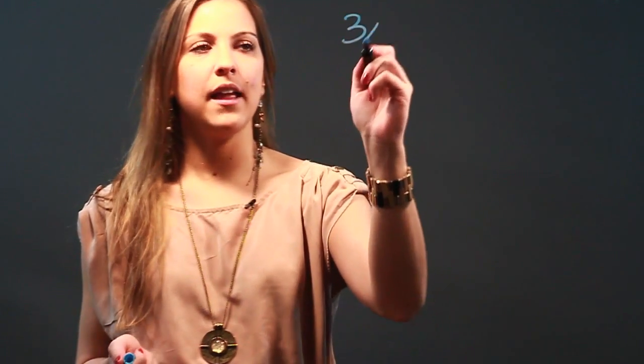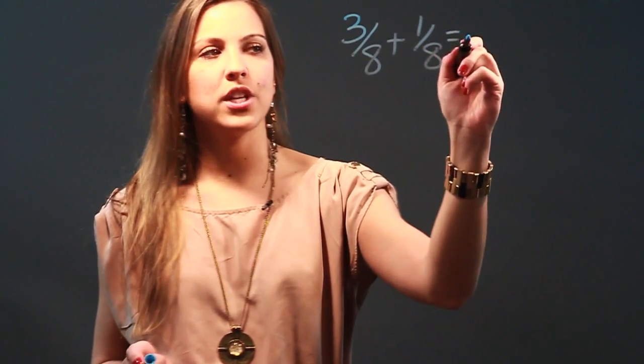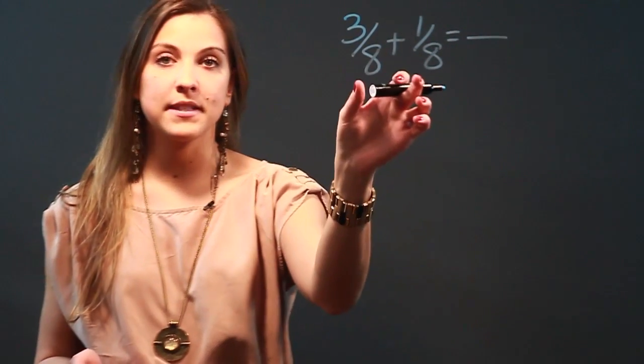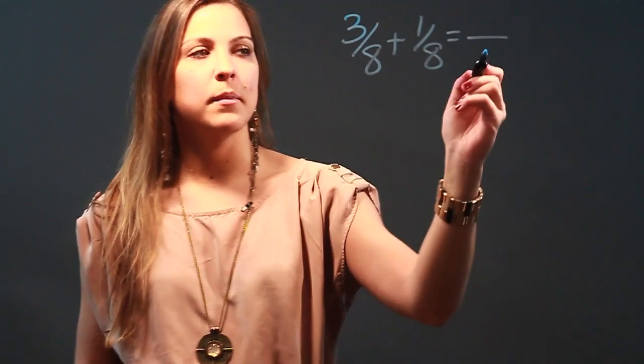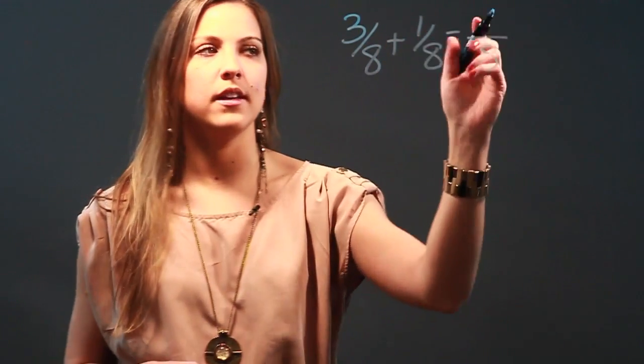So if we've got the fraction 3/8 and we want to add it to 1/8, we're going to first check and make sure that our denominators are the same and they are, they're both 8. So I'm going to keep the denominator and add the numerators. So 3 plus 1 is 4.